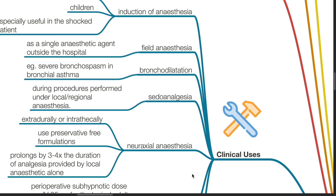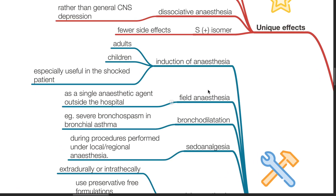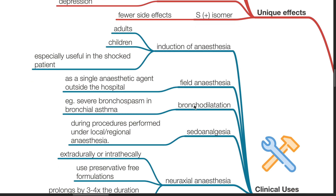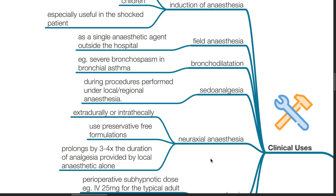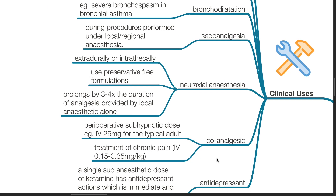Clinical uses of ketamine include induction of anesthesia in adults and children, and it is especially useful in the shocked patient. Field anesthesia as a single anesthetic agent outside the hospital. Bronchodilation, especially in severe bronchospasm and bronchial asthma. Pseudoanalgesia during procedures performed under local or regional anesthesia. Ketamine can be used during neuraxial anesthesia — extradurally or intrathecally — using preservative-free formulations. It can also be used as a coanalgesic. Perioperative sub-hypnotic dose, for example IV 25 mg for the typical adult. And treatment of chronic pain: IV 0.15 to 0.35 mg/kg.